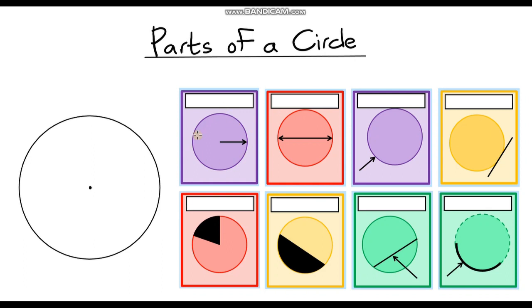So let's start with this one over here. We've got a line that goes from the centre of our circle all the way to the edge — so it's a line that goes halfway across our circle. This is called a radius. The radius is probably the most important one that we use most commonly, because it relates to calculating areas of circles.